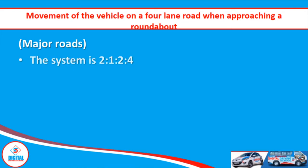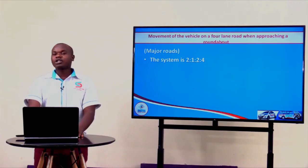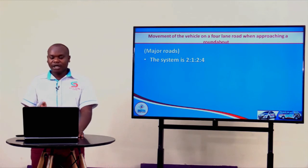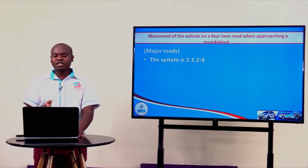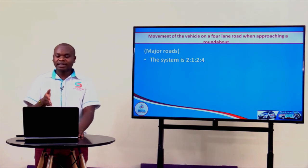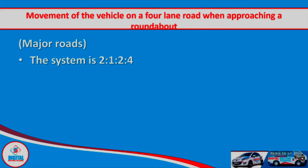The system we are supposed to follow when on a four-lane road is 2-1-2-4. Our first two represents the number of options in lane one. One represents the options in lane two. The next two represents the options in lane three. By options I mean the directions you are supposed to go when you approach the roundabout using that specific lane. And lane number four enters the innermost lane, which can take you into all directions.